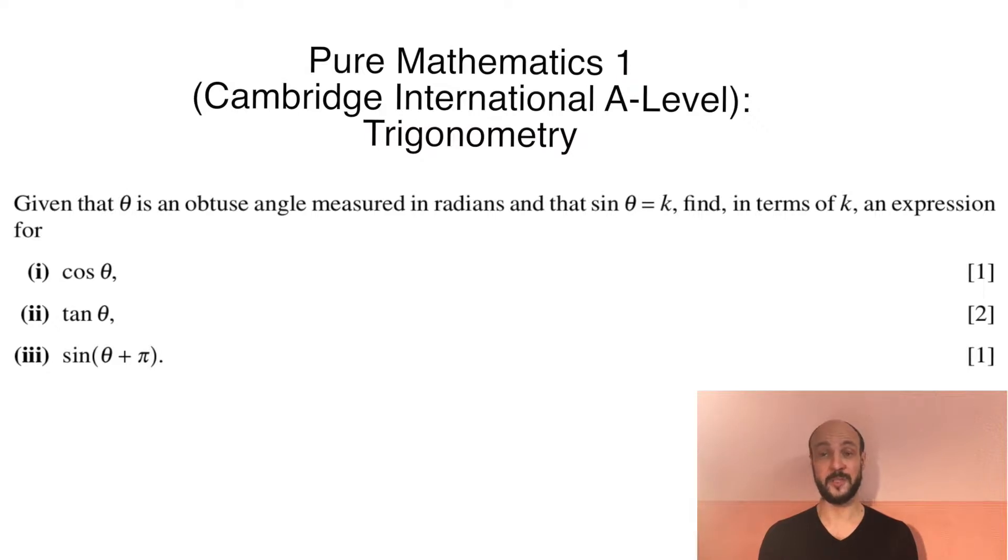Hello and welcome back to mathswithdavid.com. I'm David Swanson and today I'm going to be going through a question on the P1, the Pure Mathematics 1 paper of the Cambridge International A-level examination. This is a trigonometry question. Given that theta is an obtuse angle measured in radians and that sine theta equals k, find in terms of k an expression for 1) cosine theta, 2) tangent theta, and 3) sine of theta plus pi.